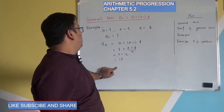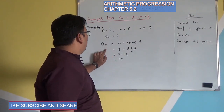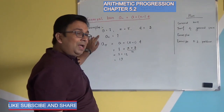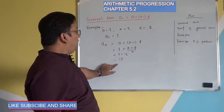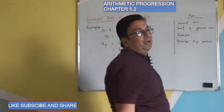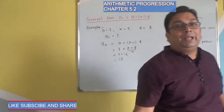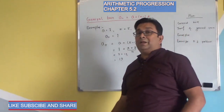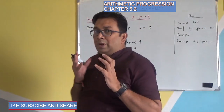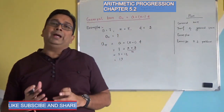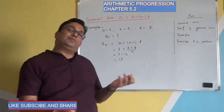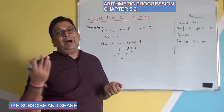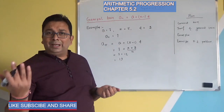We can find that our 5th term is 19. That is, 4 into 3 is 12, and 12 plus 7 is 19. So our 5th term is 19.